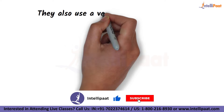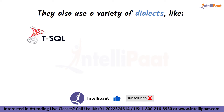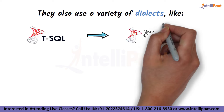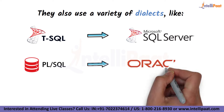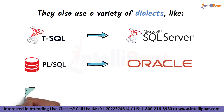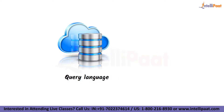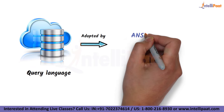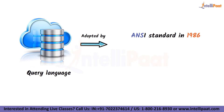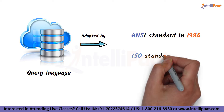They also use a variety of dialects: T-SQL is used by MS SQL Server, PL-SQL is used by Oracle, and Jet-SQL is used by MS Access. This query language was adopted as an ANSI standard in 1986 and an ISO standard in 1987.